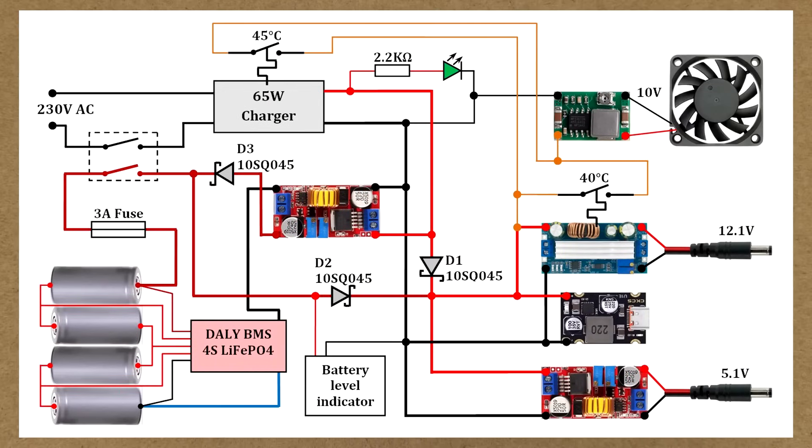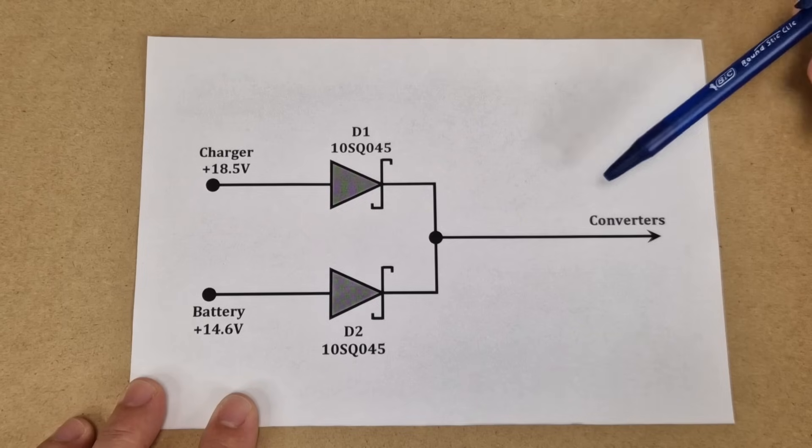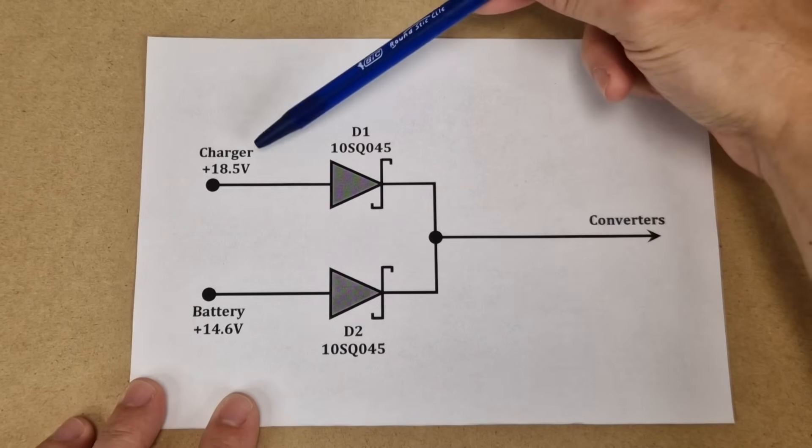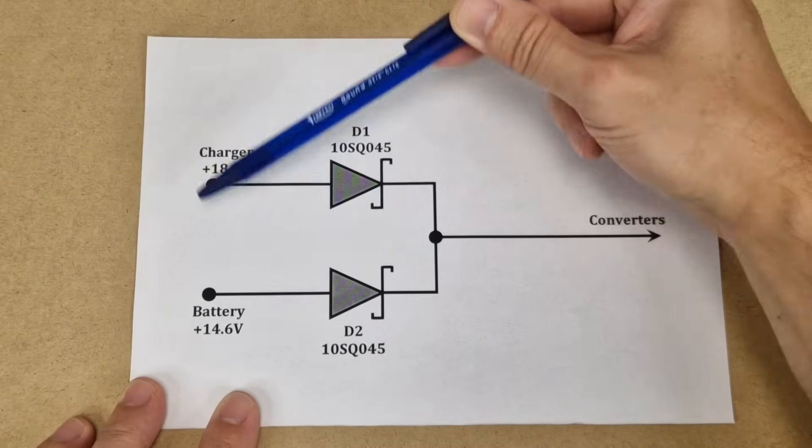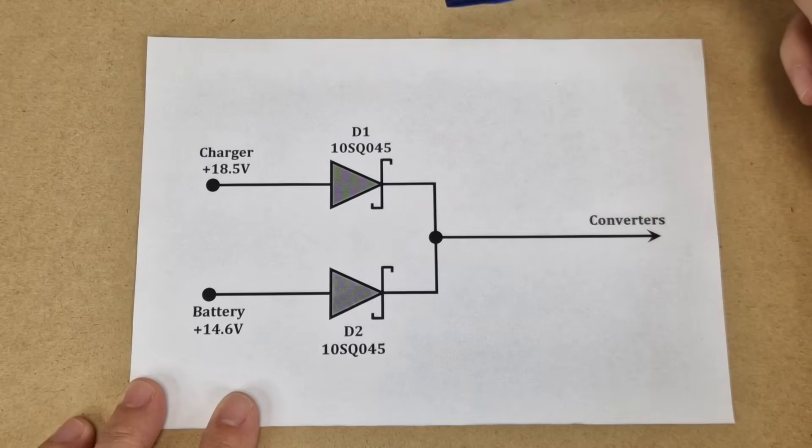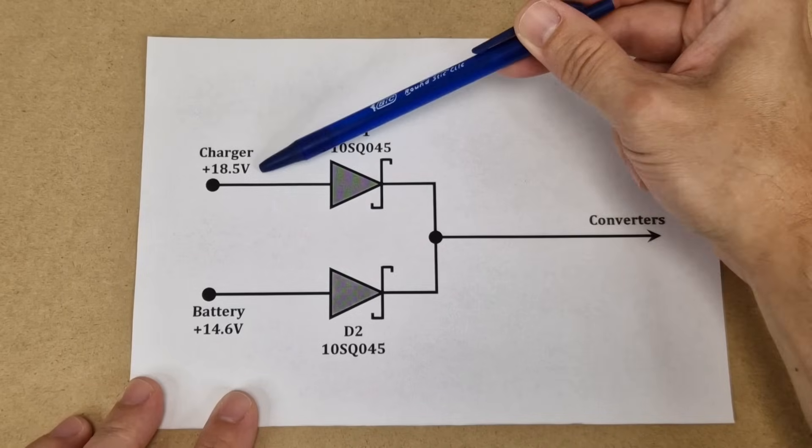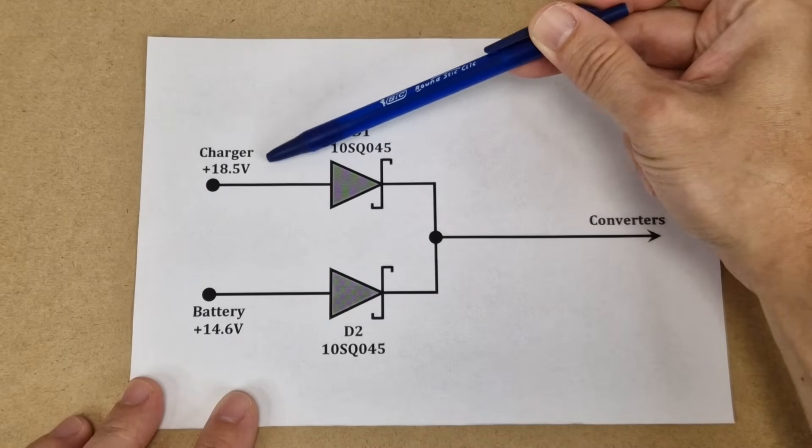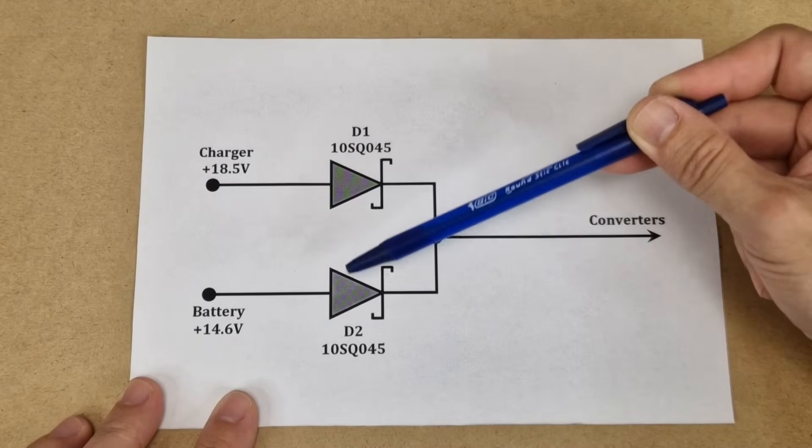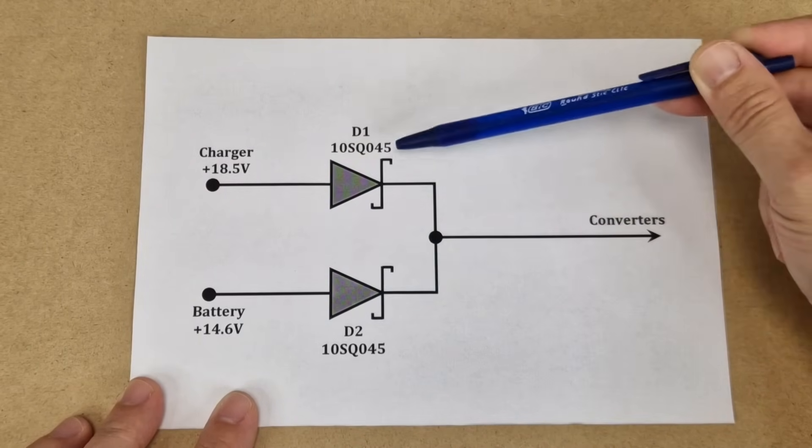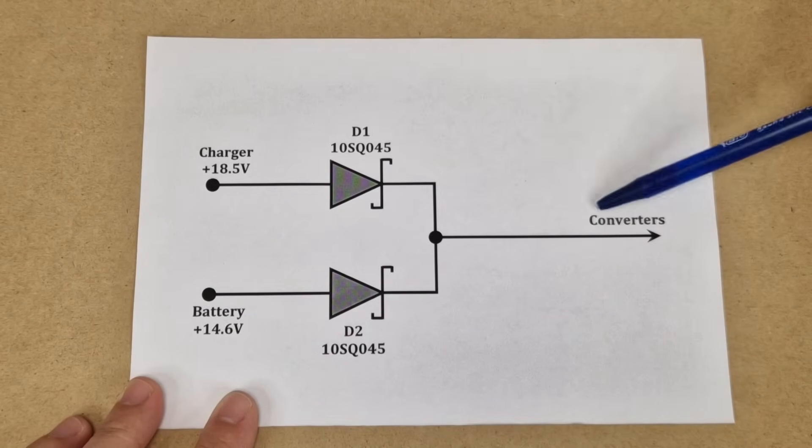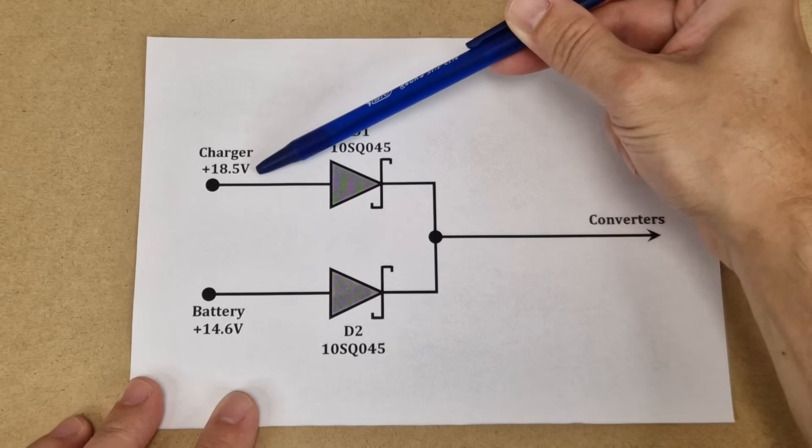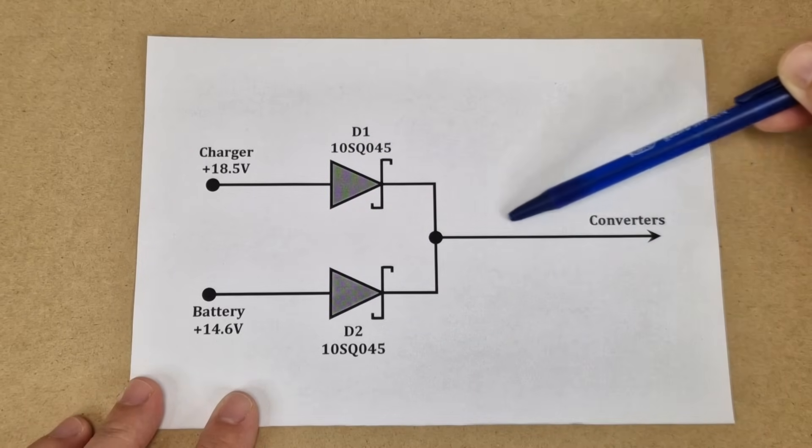This is the schematic for the UPS. You can also download it from the video description. The converters will receive power from the charger when the mains power is on, or from the battery when the mains power is off. But the charger and battery have different voltages. To make this possible, I added diodes on each voltage rail. So the two power sources will not affect each other. The converters will draw power from the highest voltage rail, which is the charger when we have mains power.